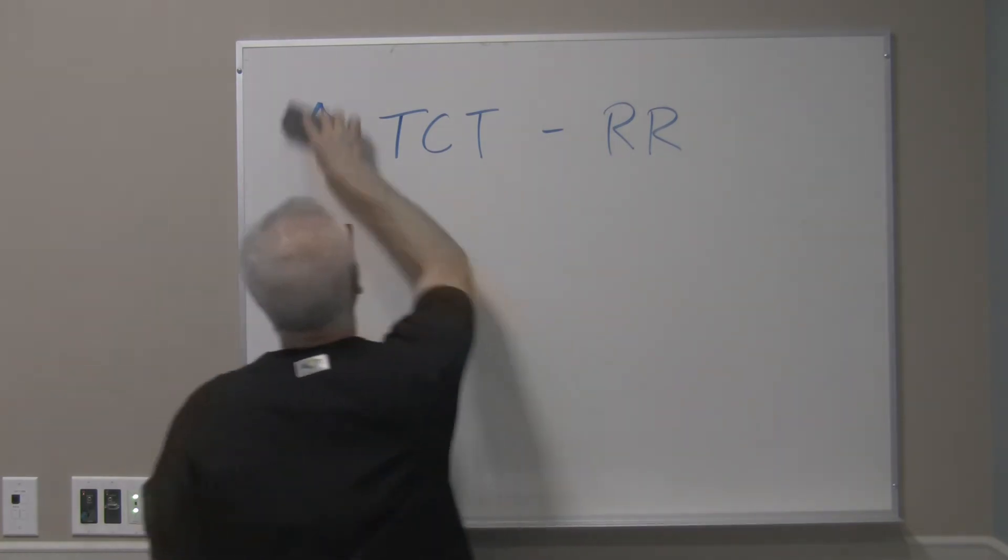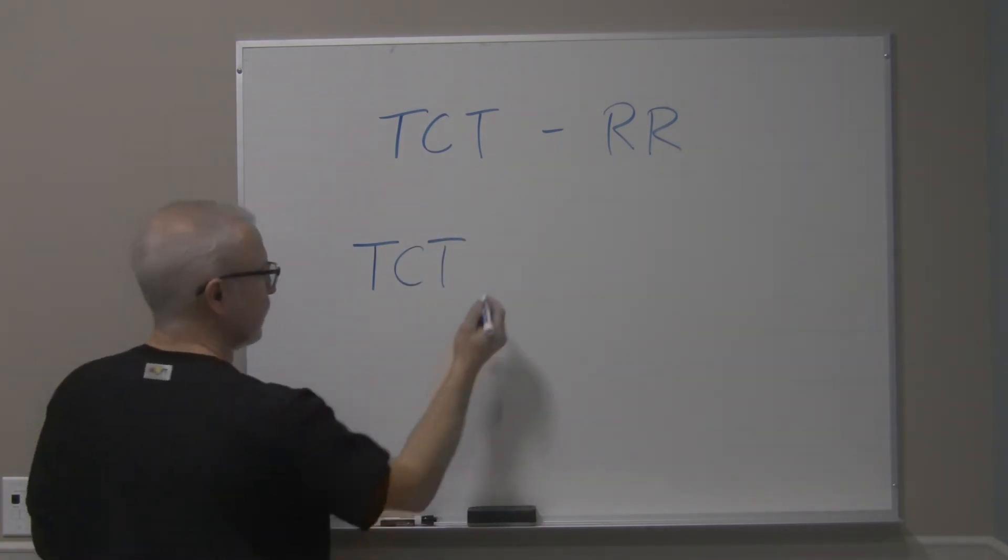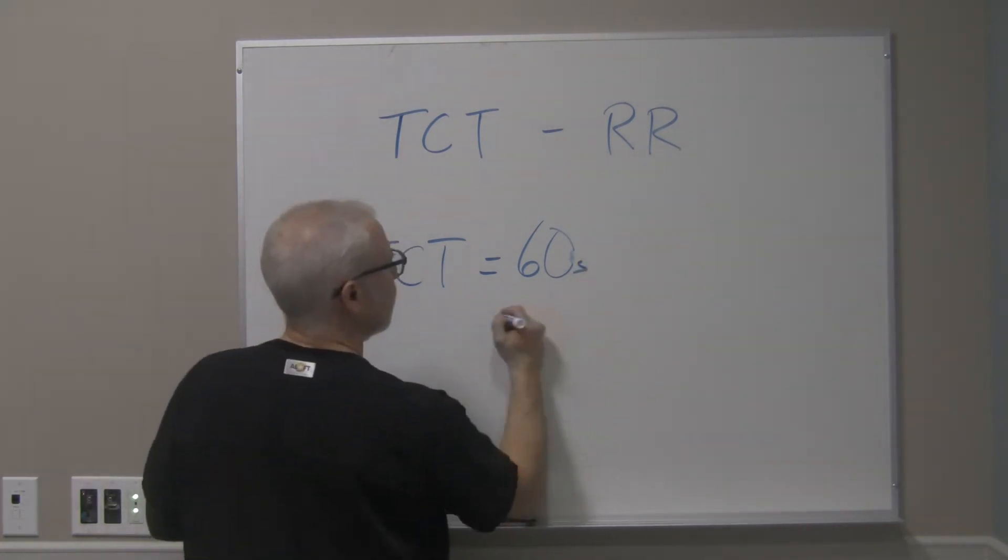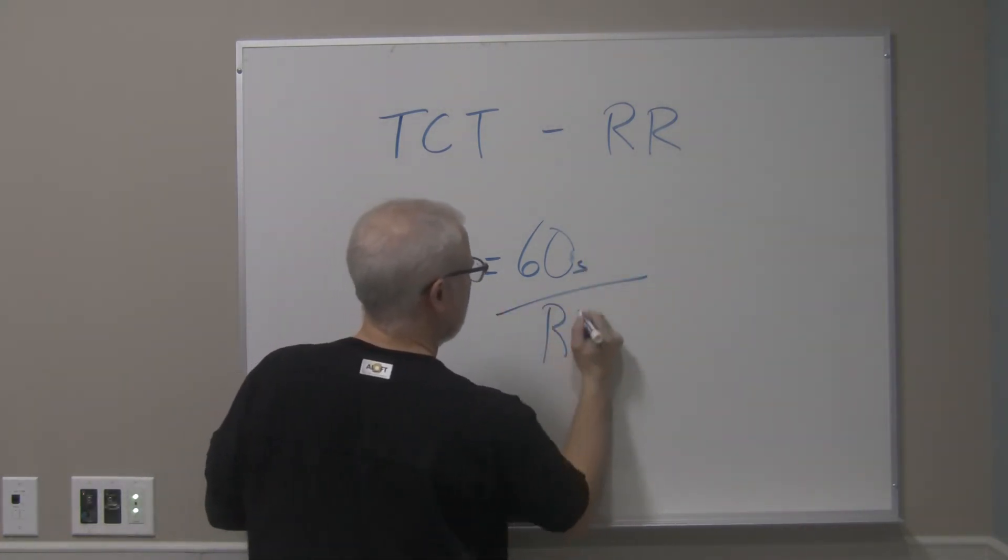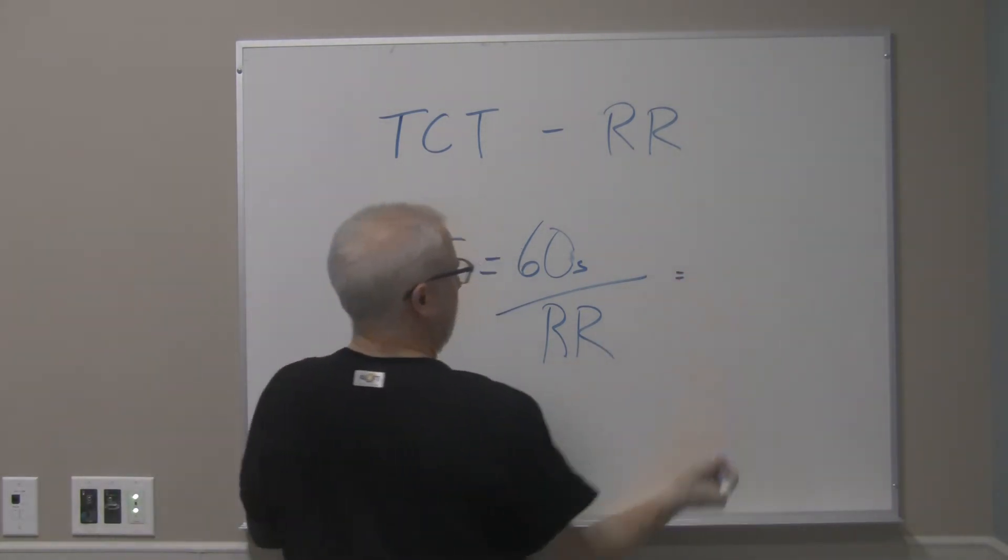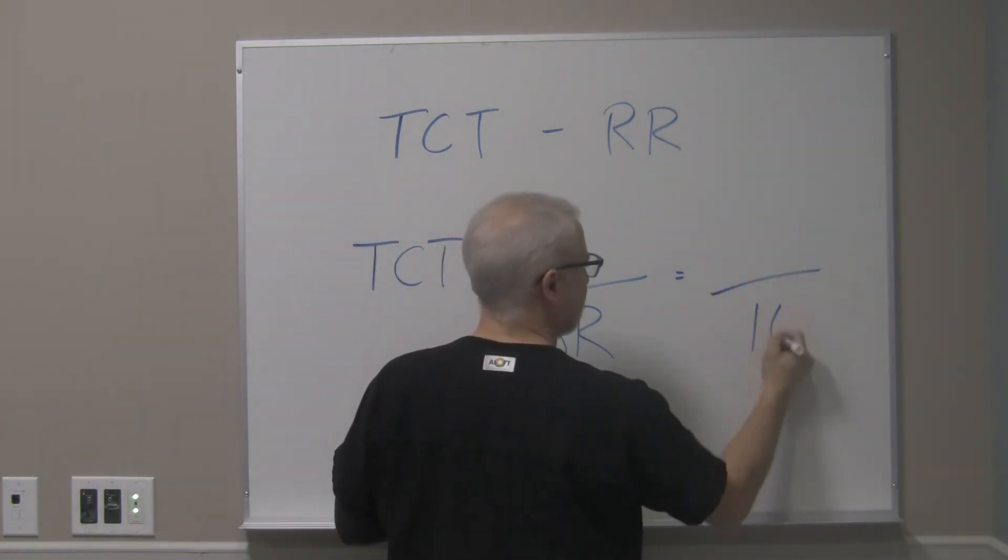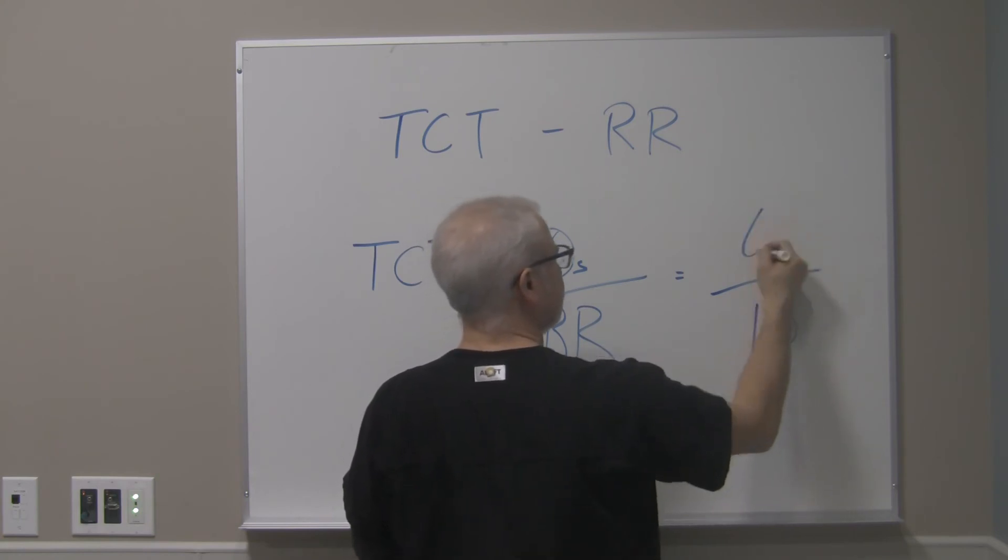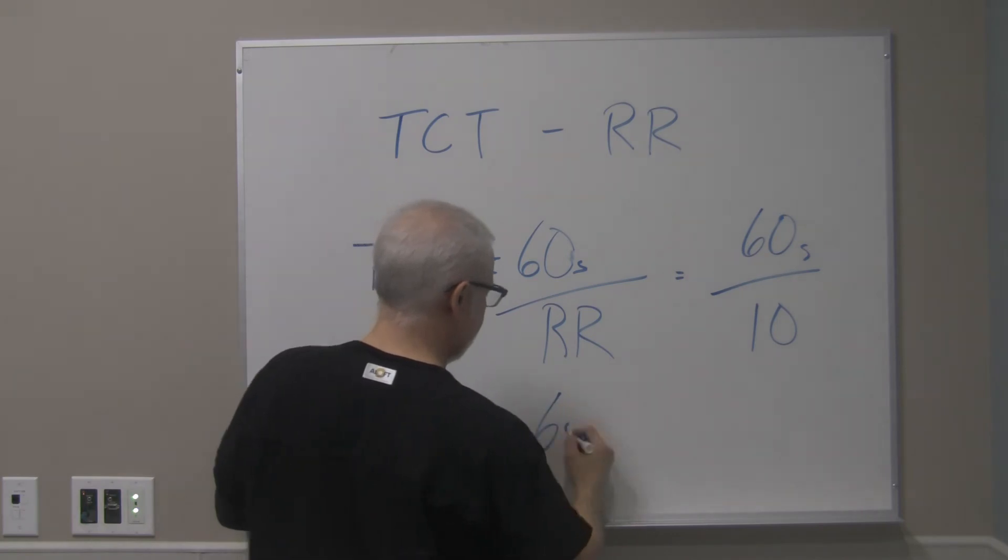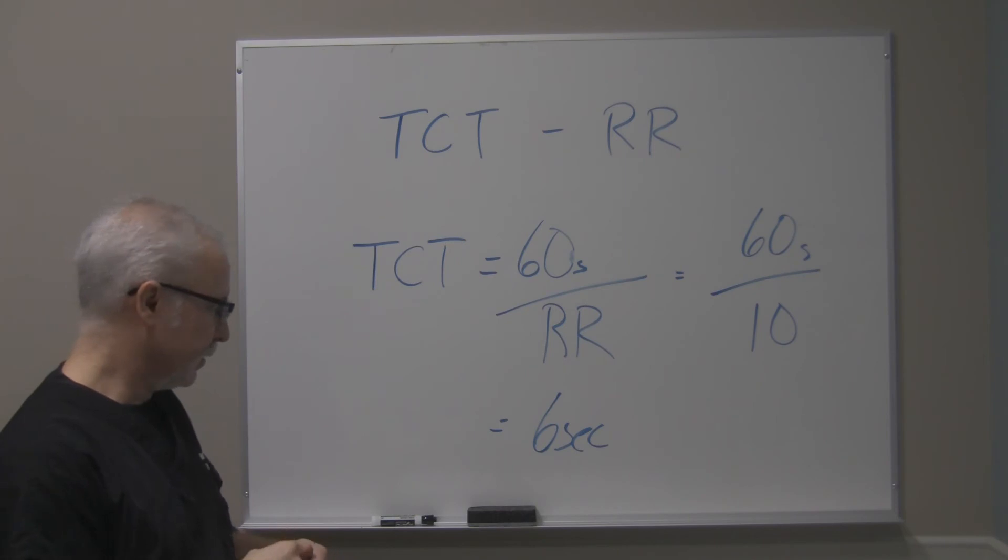Total cycle time is simply, and I should have probably done this before, but total cycle time is simply 60, since there's 60 seconds in one minute, divided by the respiratory rate. So again, if you happen to have a respiratory rate of 10 breaths per minute, the total cycle time would be 60 divided by 10. Total cycle time would be 6 seconds. And that's how you calculate it out.